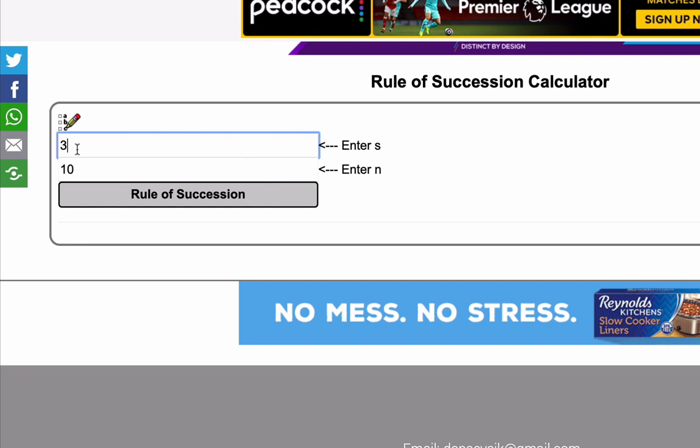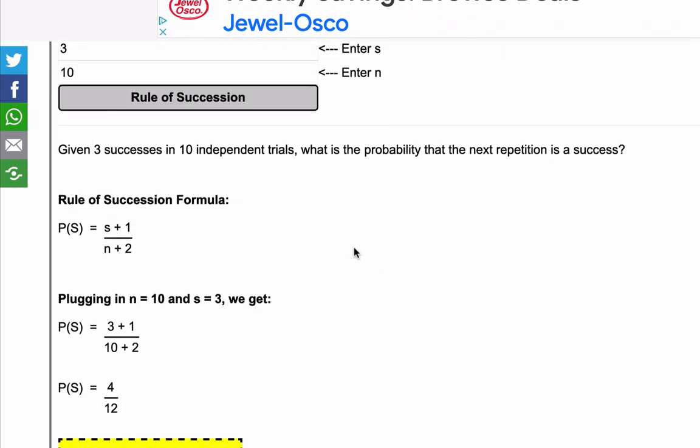And so once we have our S, for this sample problem I'll use three successes in 10 trials. We'll press the button, and here we go.